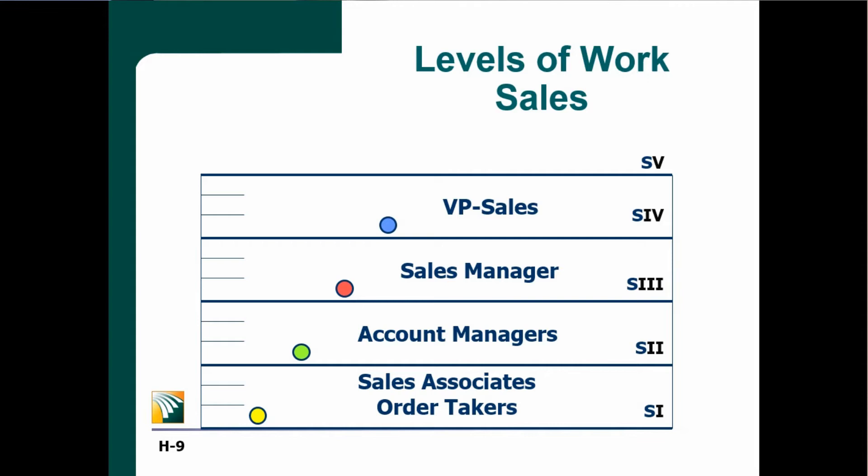If you have a two-year sales cycle where you're doing needs analysis, needs assessment, prototype building, prototype testing, prototype deconstruction, and prototype reconstruction — just to demonstrate that you have the internal capability to bid, maybe for a government project — what stratum capability might you need in that salesperson? High three, low four. That person may not even be managing other people, yet they're managing the uncertainty and ambiguity in a sales cycle that may take as long as two years before you finally get a contract.